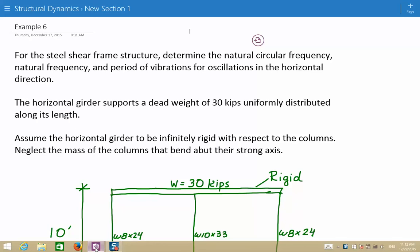The horizontal girder on top supports a dead weight of 30 kips, uniformly distributed along its length. Assume that the horizontal girder to be infinitely rigid with respect to the columns, and neglect the mass of the columns that bend about their strong axis.